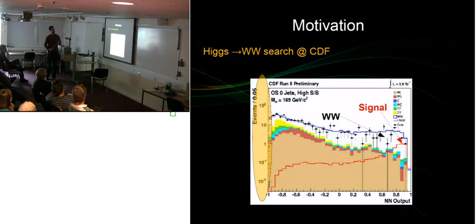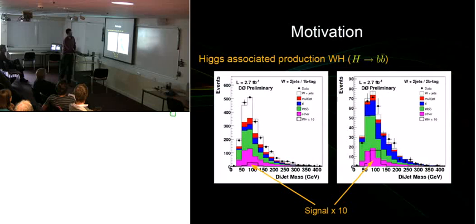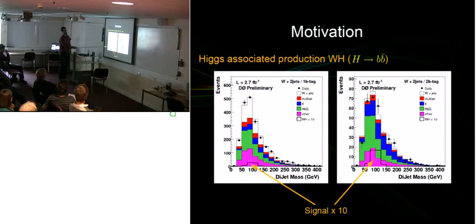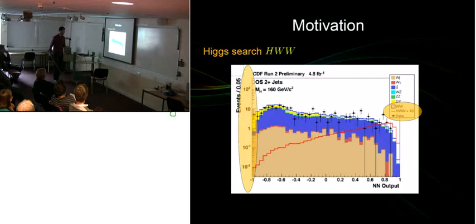A lot of measurements are, as of now, limited by our ability to model the background, partly due to theory limitations. To show how difficult the experimentalists' task is: it's difficult to see the signal in the data, and they have to apply tricks — like a log scale, or multiplying the signal by 10. With such a small signal, you really need to understand all the backgrounds very well before you can claim to see it.